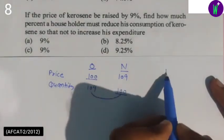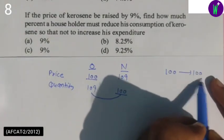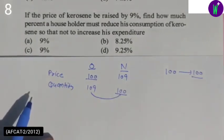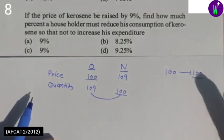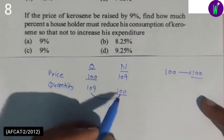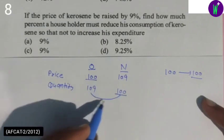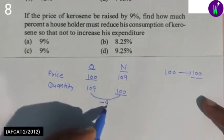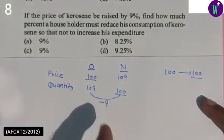In the beginning, with price at 100, the quantity was 100 units. Now with the price at 109, to keep expenditure the same, we need to find the new quantity. The proportion is 100 to 100 equals 109 to what? So from 109 we go to 100.